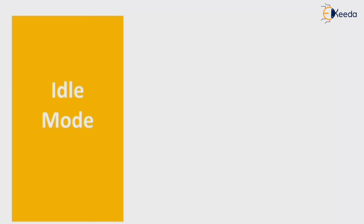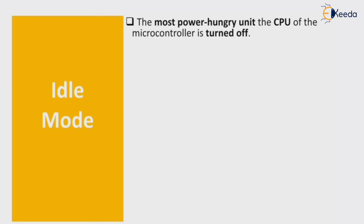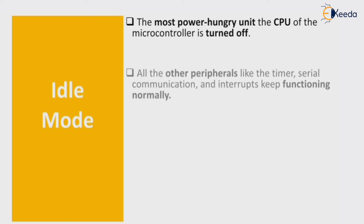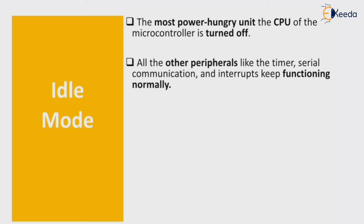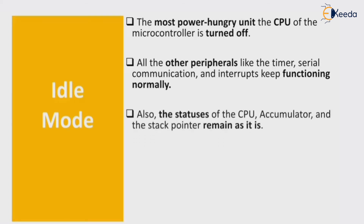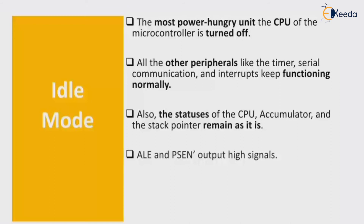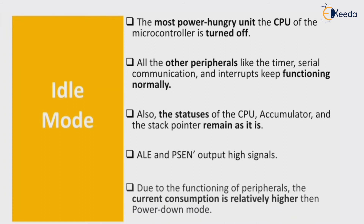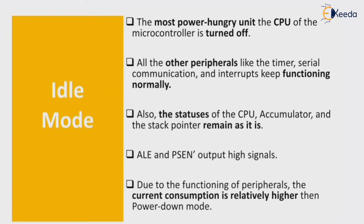The next mode is idle mode. The most power-hungry unit, which is the CPU, is turned off in idle mode. All other peripherals like timer, serial communication, and interrupts keep functioning normally. The status of the CPU, accumulator, and stack pointer remain unchanged. The ALE and PSEN outputs become high. Due to the functioning of peripherals, current consumption is relatively higher than in power down mode.